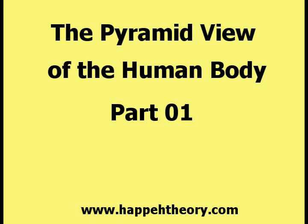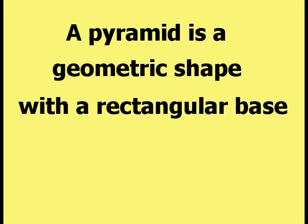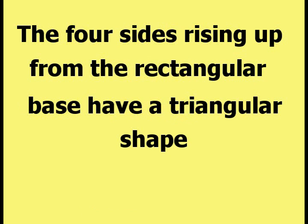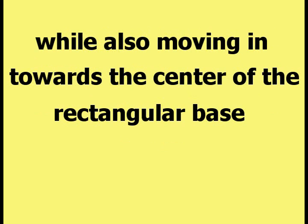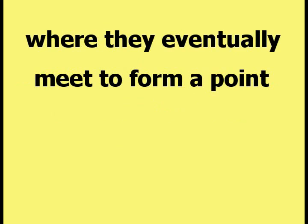This video is about the pyramid view of the human body. A pyramid is a geometric shape with a rectangular base. The four sides rising up from the rectangular base have a triangular shape. These triangles rise up some arbitrary vertical distance while also moving in towards the center of the rectangular base, where they eventually meet to form a point.